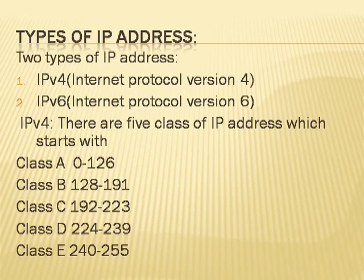Types of IP address: there are two types — Internet Protocol version 4 (IPv4) and Internet Protocol version 6 (IPv6). There are five classes of IP address. Class A: starts with 0 to 126 before the first dot. Class B: 128 to 191. Class C: 192 to 223. Class D: 224 to 239. Class E: 240 to 255.